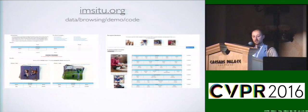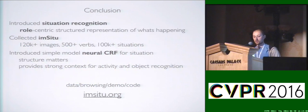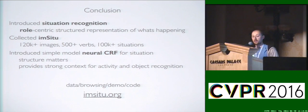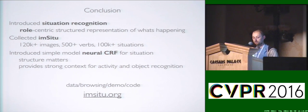All of our data, browsing tools, a demo, and all of our code are available at insitu.org. To summarize: in this work we introduced situation recognition, a role-centric representation of what's happening in an image. We introduced a large-scale dataset with over 120,000 images and 500 verbs, and introduced models that show that situations provide strong context for activity and object recognition. Everything is available at insitu.org.